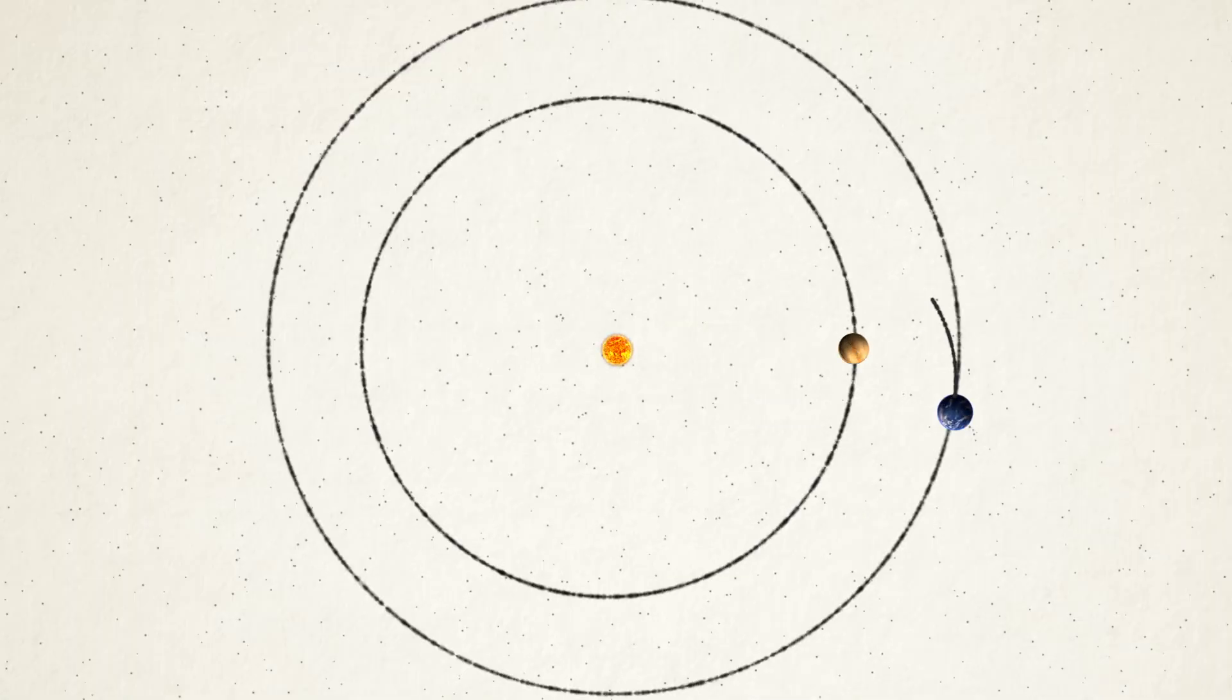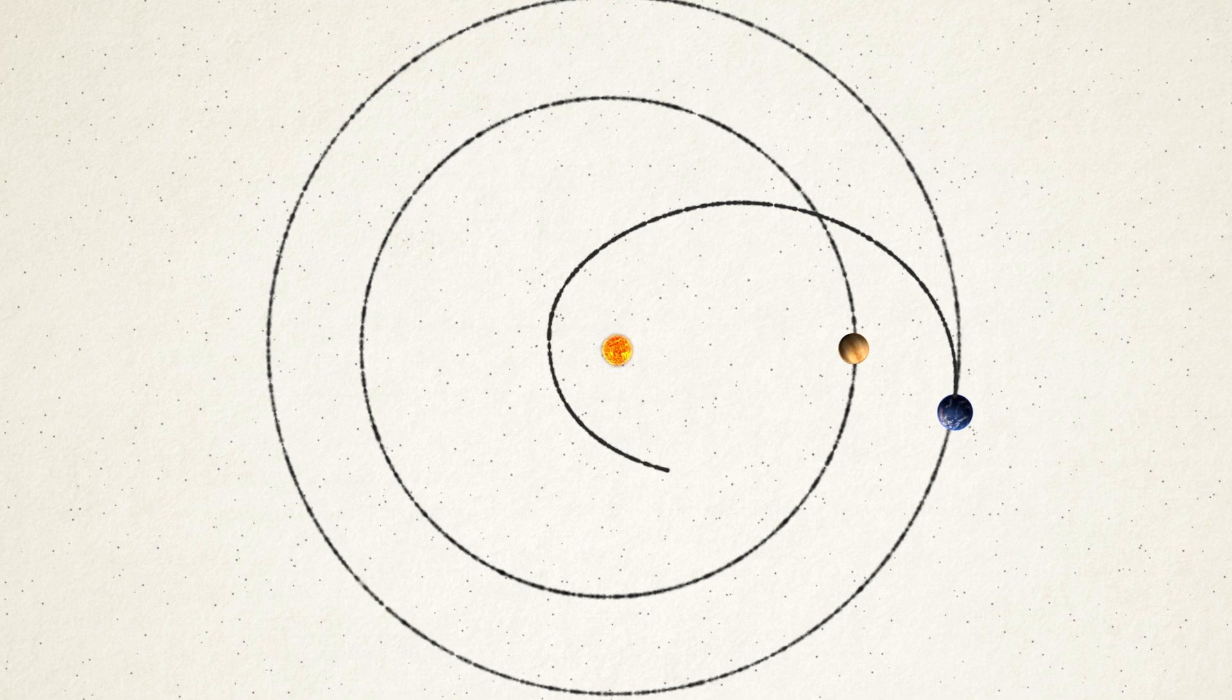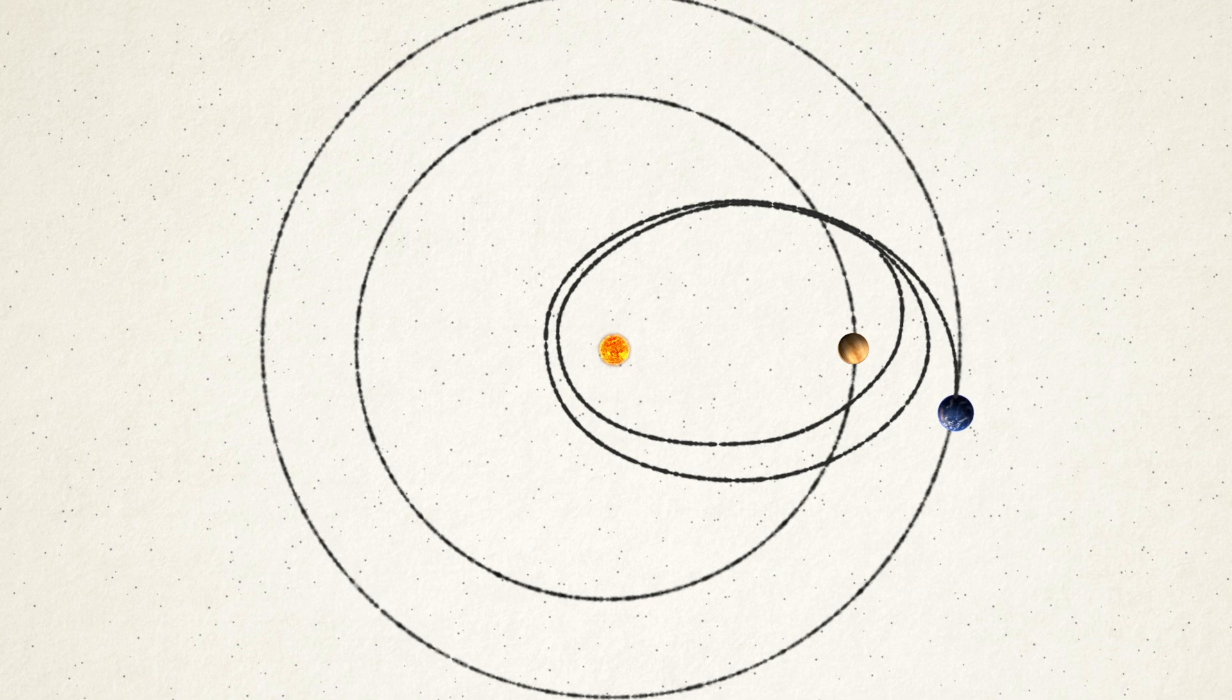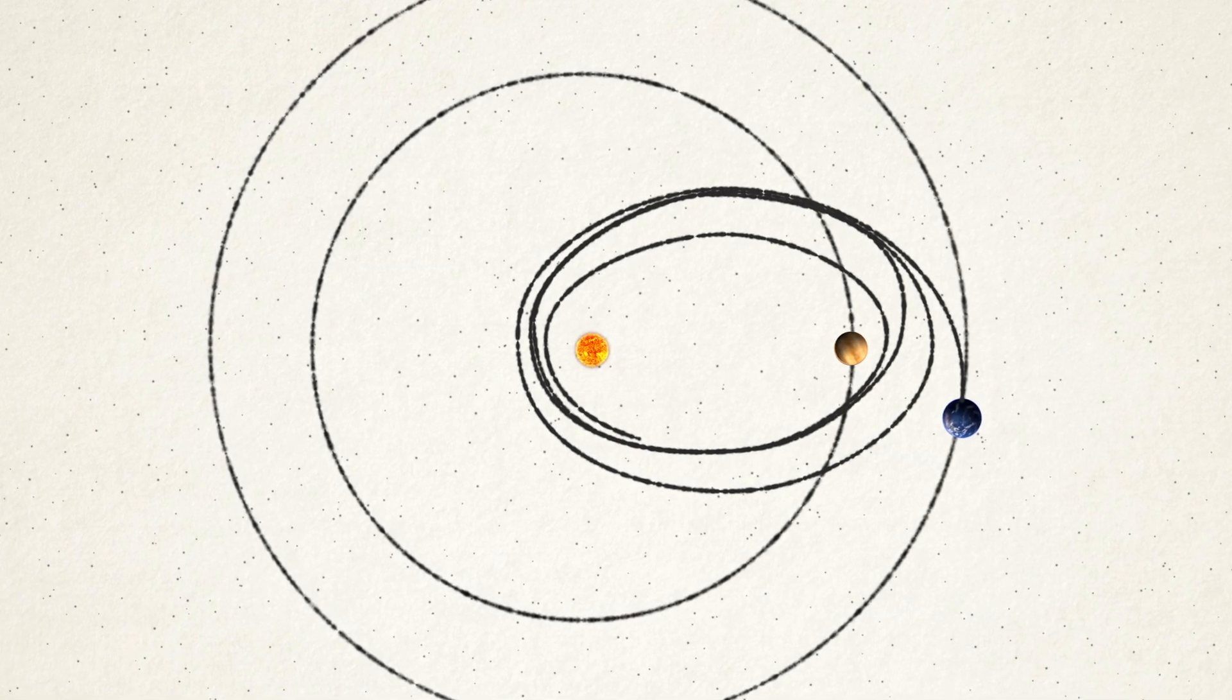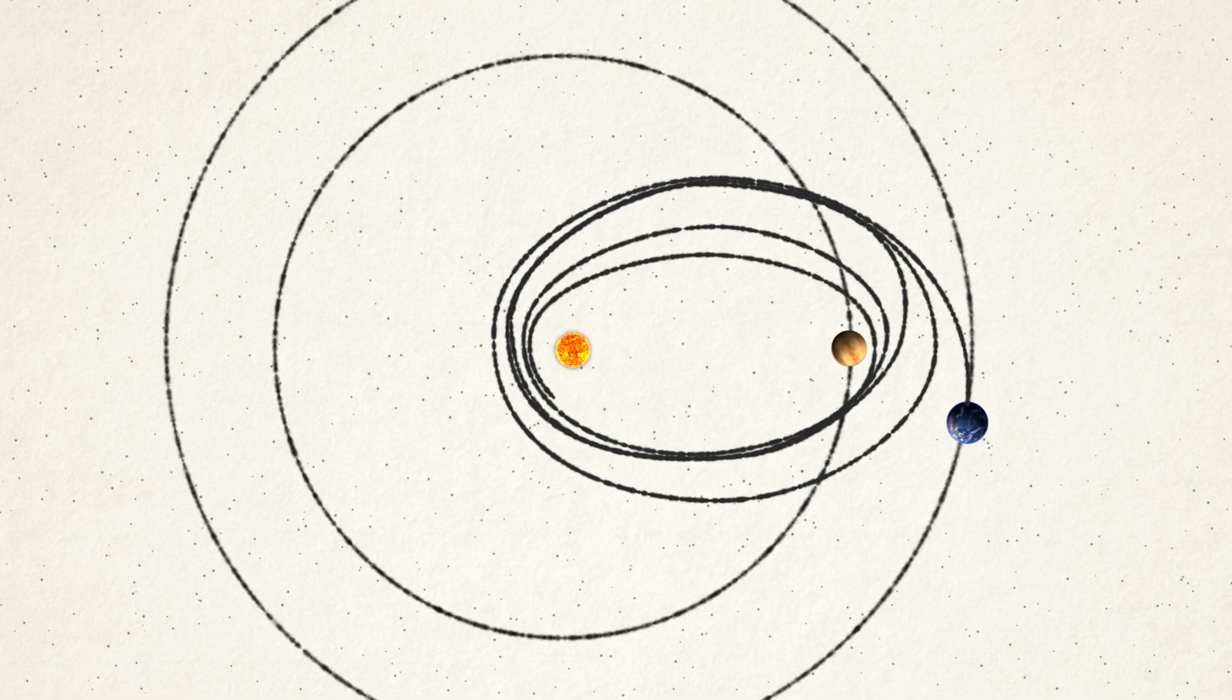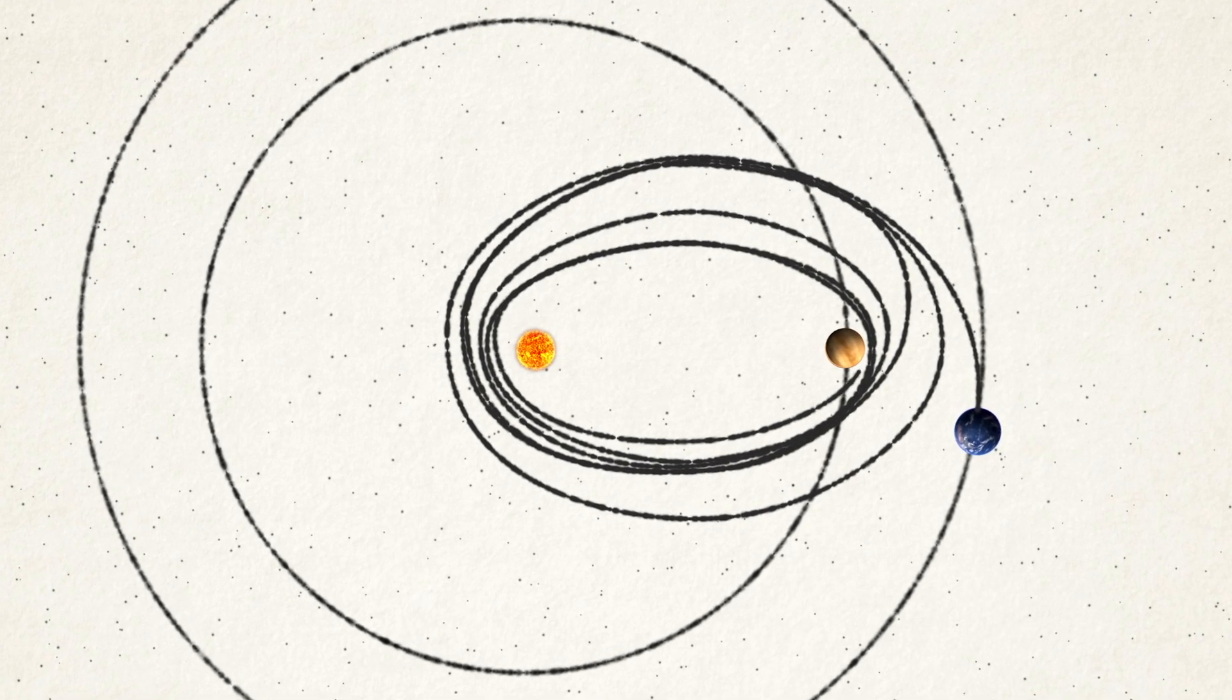Since Parker Solar Probe plans to fly past the Sun, it doesn't need to cancel out all of Earth's sideways speed, but it does need to remove 53,000 miles per hour of it. That's why it's using one of the most powerful rockets available, and additional gravity assists from Venus over a period of several years.